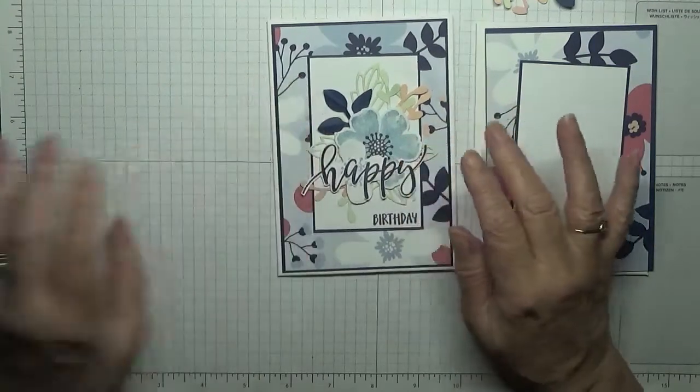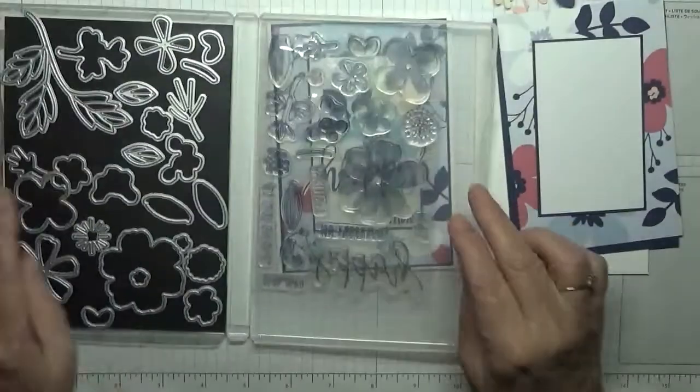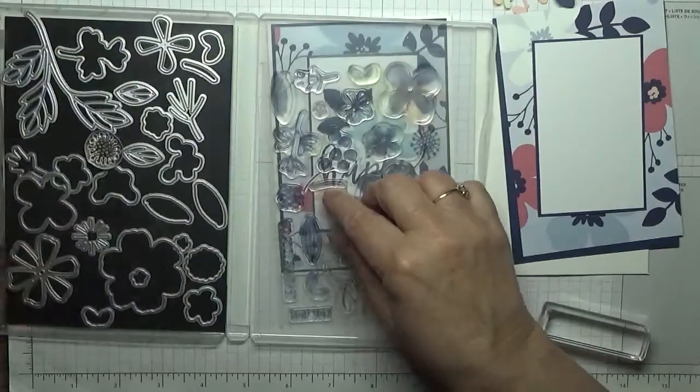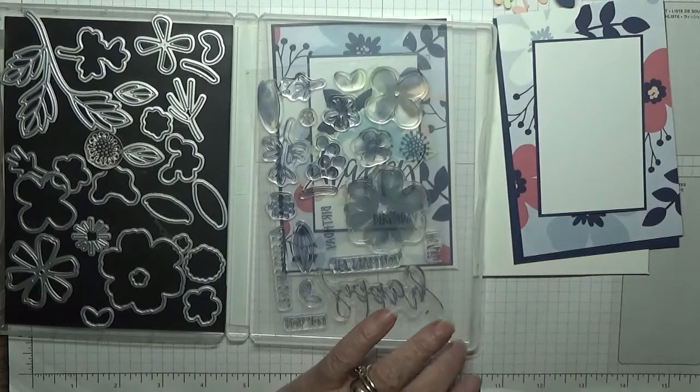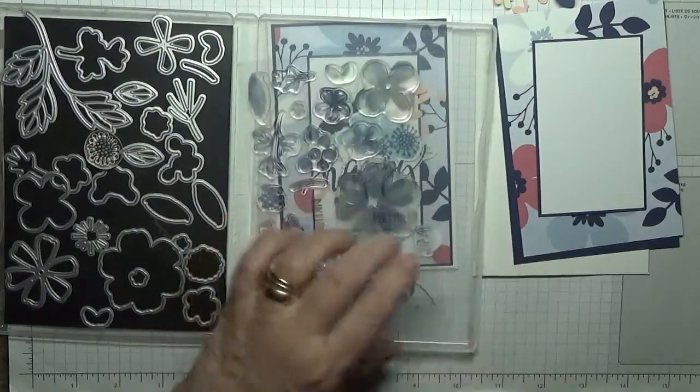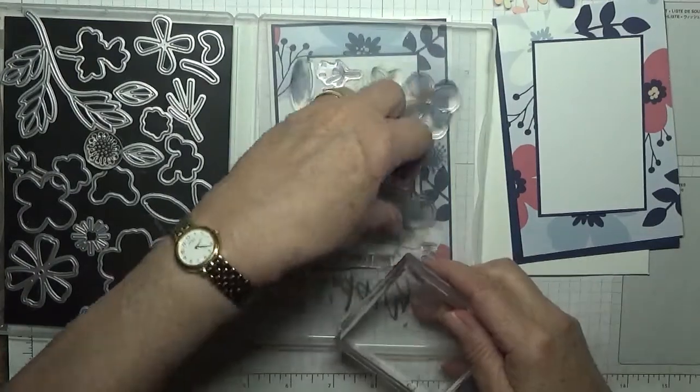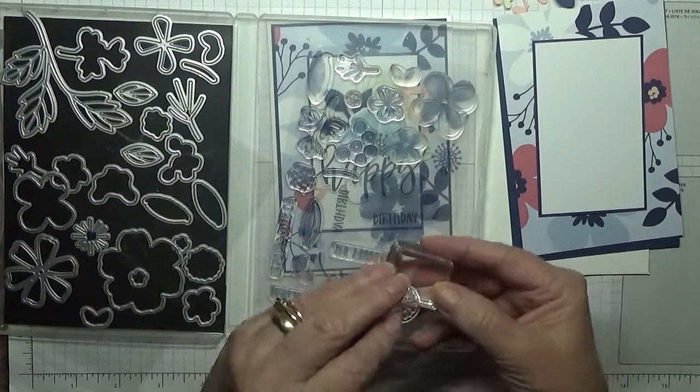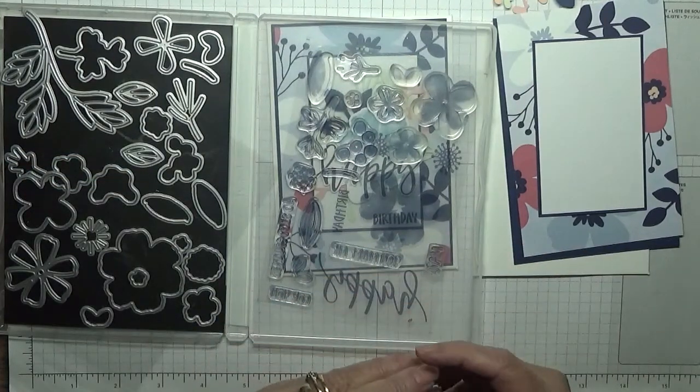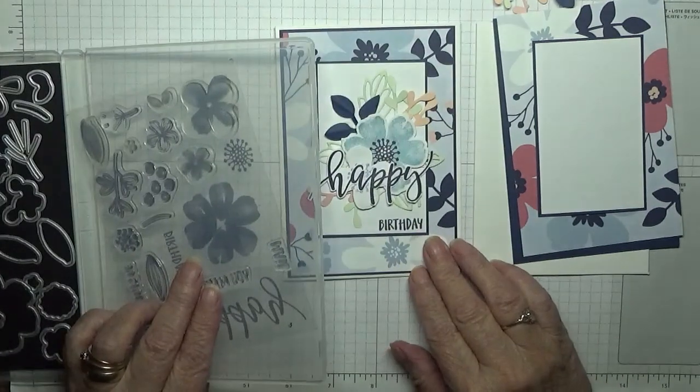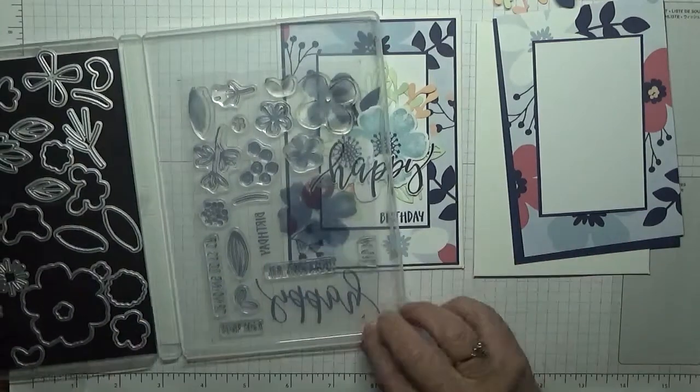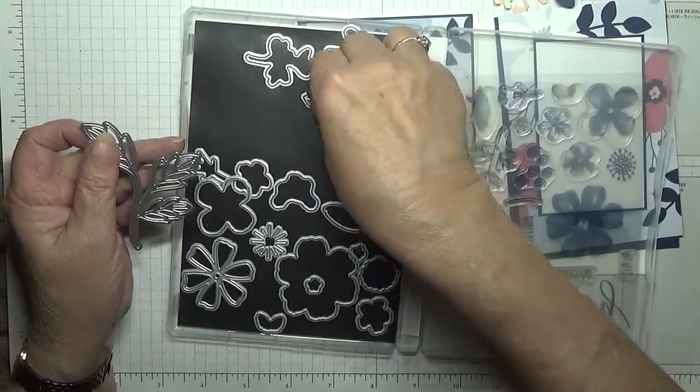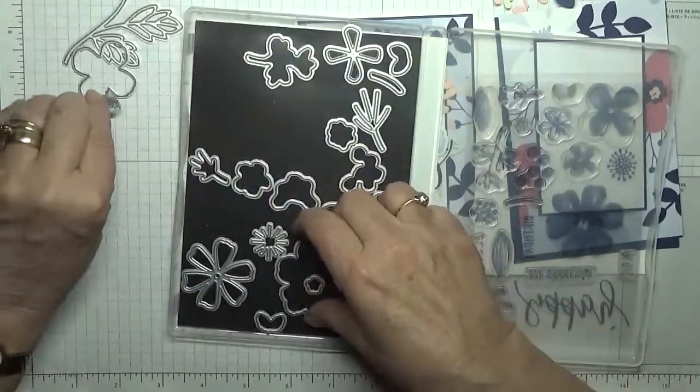I've got no stamps out, that's not very good. So we need Birthday, a big block for the Happy, a big block for this one, a small block, that one. That's it stamp-wise. For dies we need this big leaf, these two little leaves, this flower and this big flower.